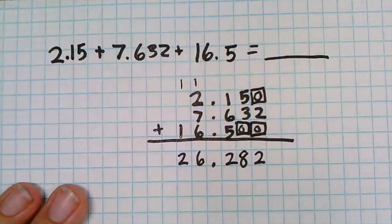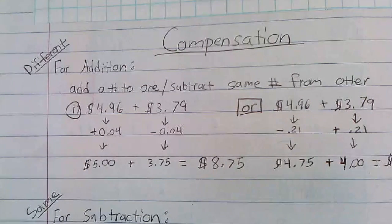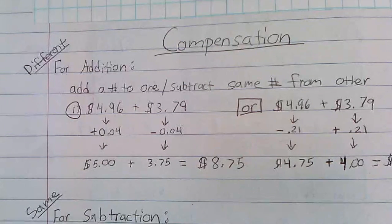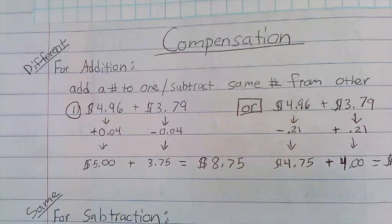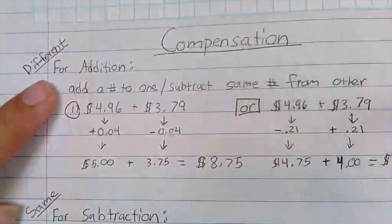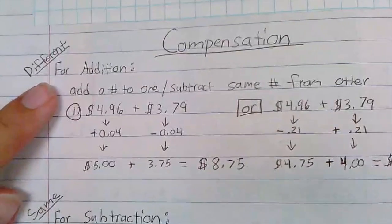Okay, now we're gonna talk about something kind of cool you can do with mental math to help yourself be able to add up or subtract, especially money in a store. So what we're gonna do is for addition, you're going to add a number to one and subtract the same number from the other.